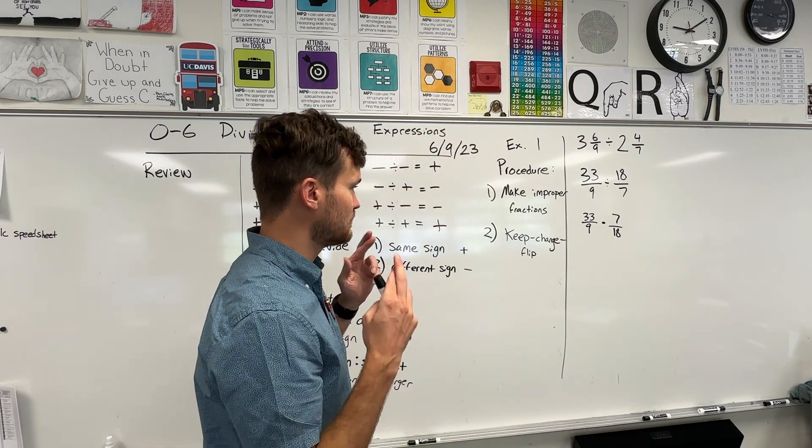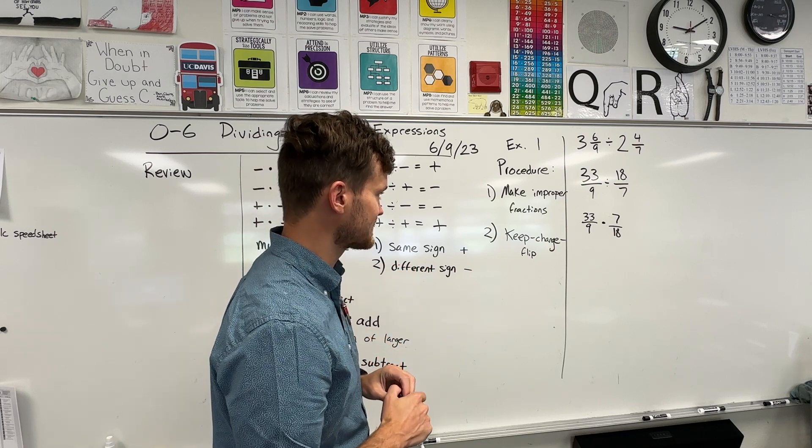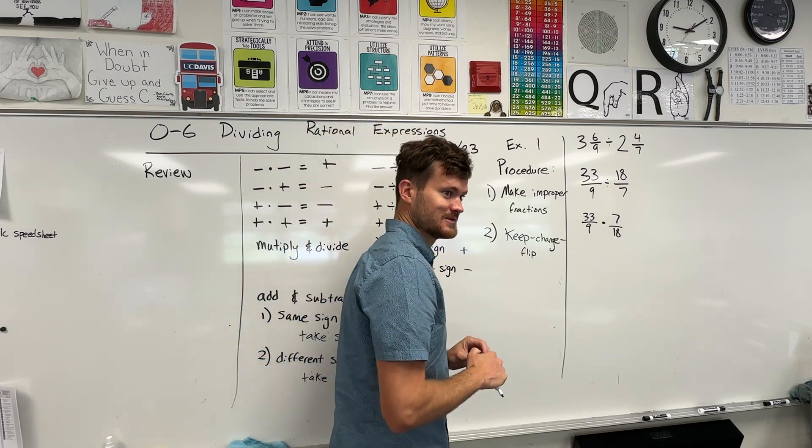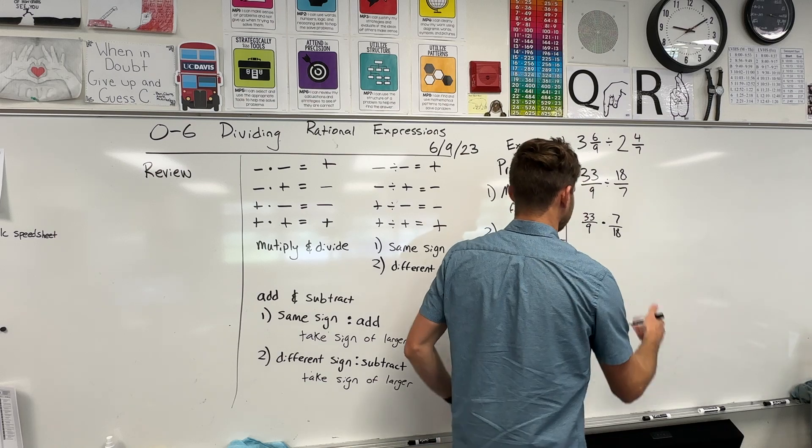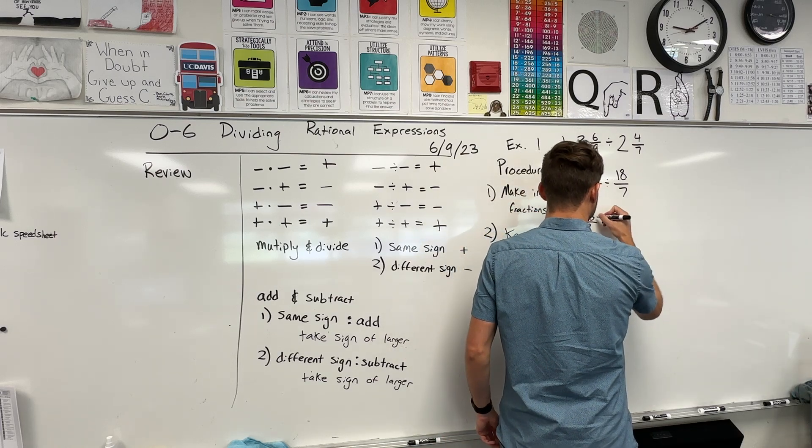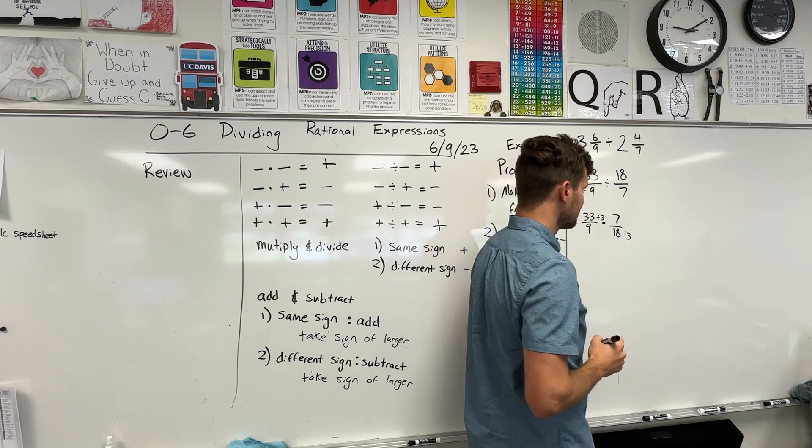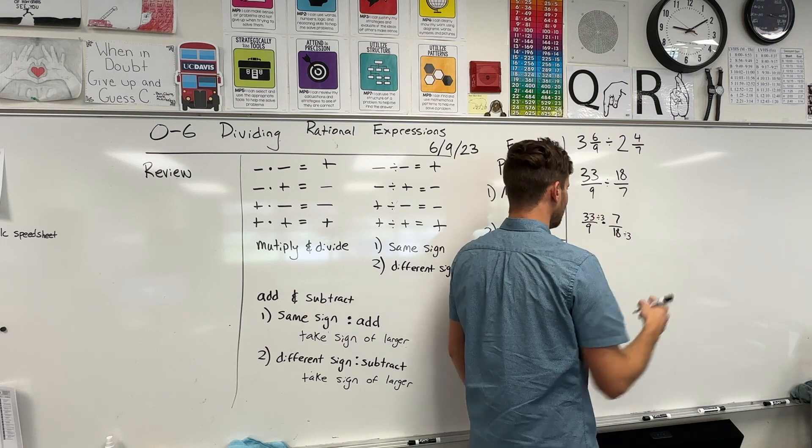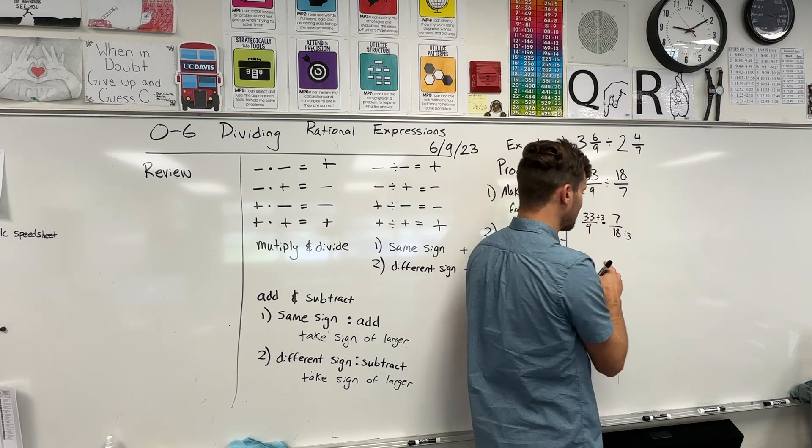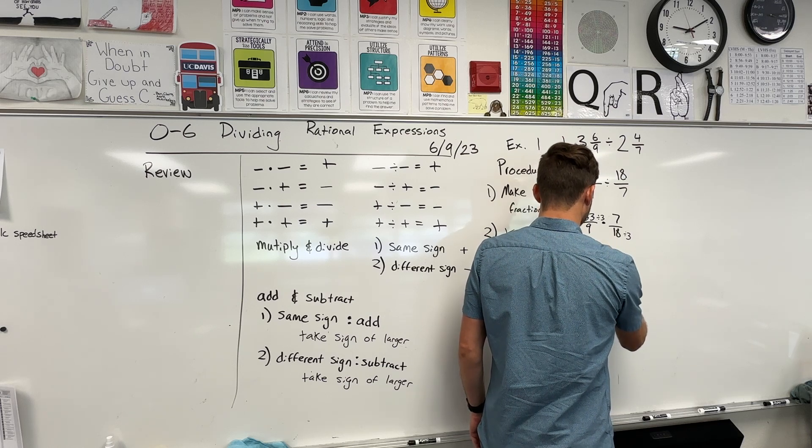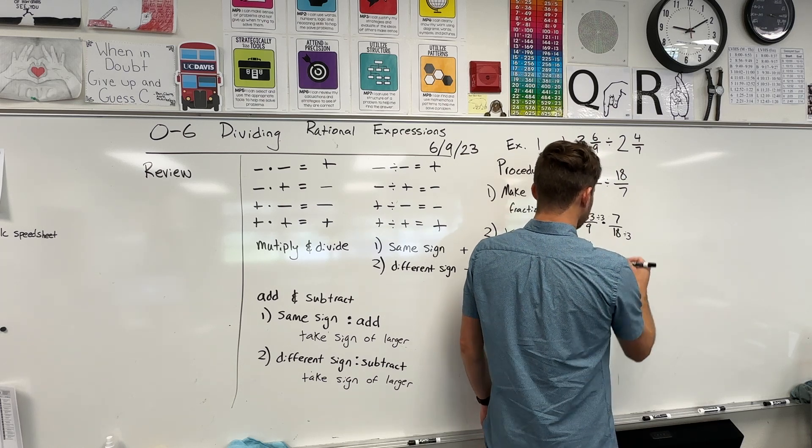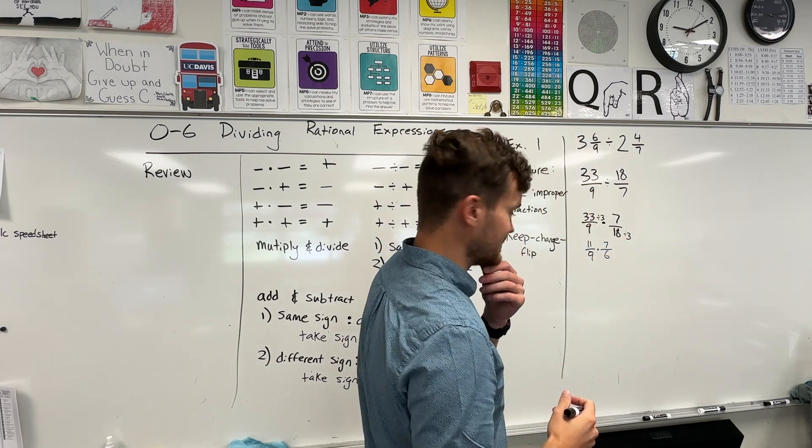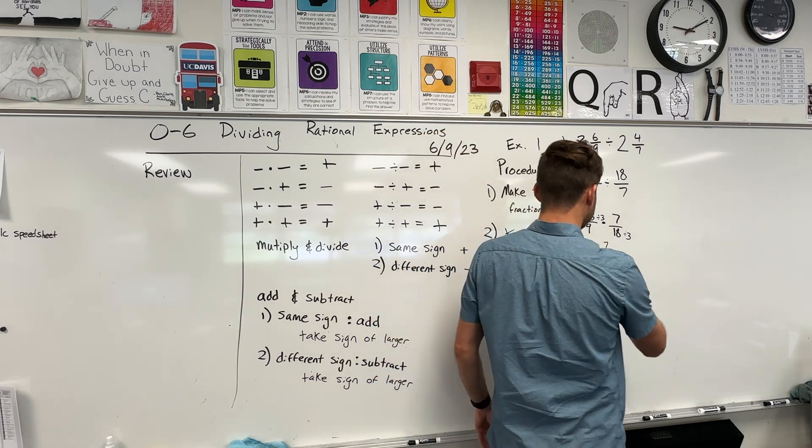I'm going to pray to some math deity that there's some cross-canceling here because this is a gross problem. Ooh, I see some way to cross-cancel. You guys see it? There is a way. Divide by three. There it is. Watch this. If I divide the bottom by three and I divide the top by three, you're allowed to do that. You can divide the top and bottom by the same number because you're just going to multiply straight through anyway. The 33 will turn into 11. 11 over 9 times 7 over what? 6. I made the problem a little bit easier. I don't think there's any more cross-canceling, unfortunately.